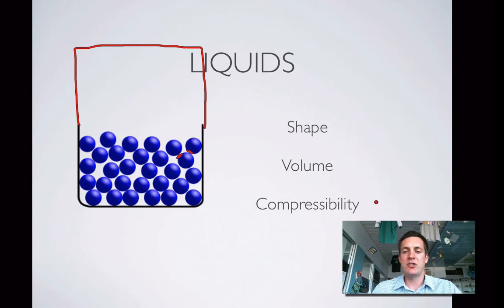Compressibility, this is virtually zero, so you can't really compress a liquid. It looks like there's little spaces in between the particles, but they're negligible, really. The fact is the particles can move around, but they're still very close together, so you can't compress a liquid, or hardly at all.